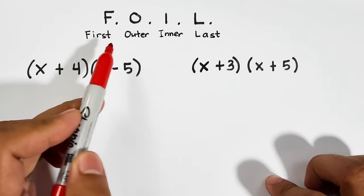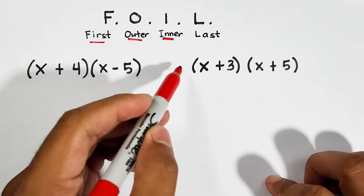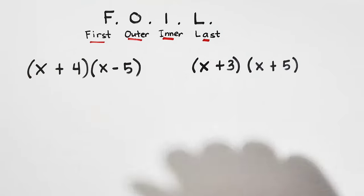Your FOIL stands for the first terms, outer terms, inner terms, and last terms. So without further ado, let's do this topic.